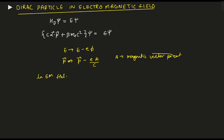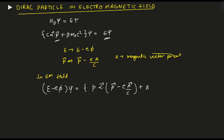In the EM field, the Dirac equation becomes: E minus e phi times psi equals c times alpha dot (p minus eA/c) plus beta m_0 c squared, acting on psi. This is not yet in the Hamiltonian form H psi equals E psi, so we need to rearrange it.